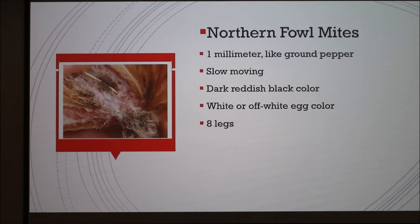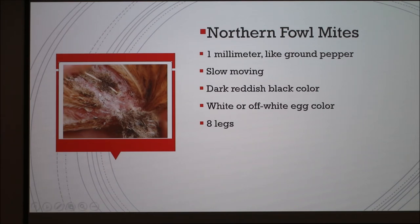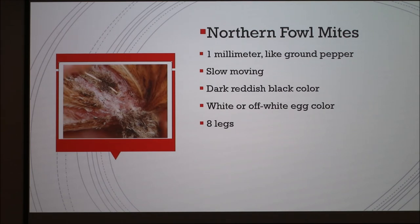A more common parasite found in poultry is the northern fowl mite. These are smaller than lice — about one millimeter — and they look like ground pepper. They're a darkish red-black color. Their eggs, which you usually see the mites before you see the eggs, are a white-to-off-white color. They have eight legs.